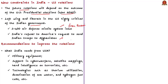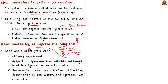Now the second part of the editorial covers the author's recommendations to improve present India-US ties. The author says India requires give and take on both sides. India needs military equipment from the US to fight battles against China on its border. India also needs US and Israeli support in cyber warfare and satellite mapping of China and Pakistan, hard intelligence on terrorists at its borders, and technologies such as thorium utilization, desalination of sea water, and hydrogen fuel cells.